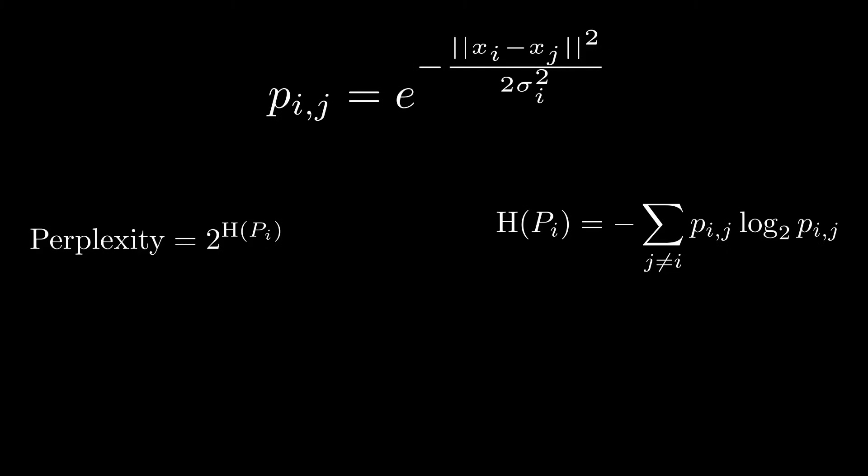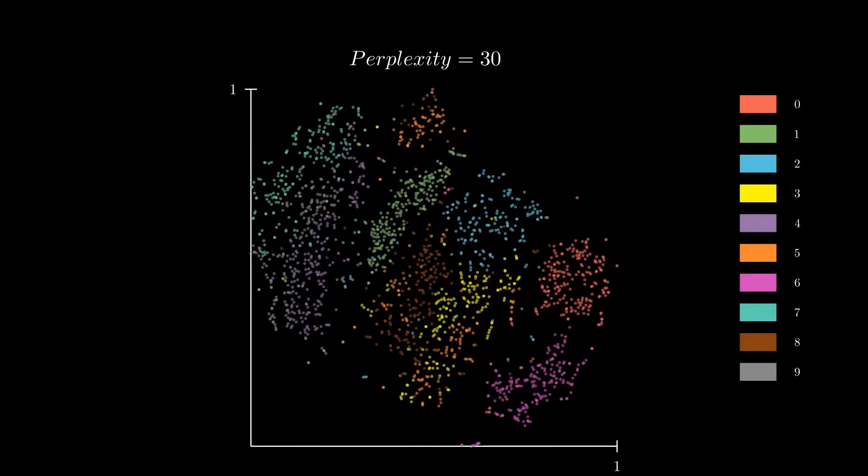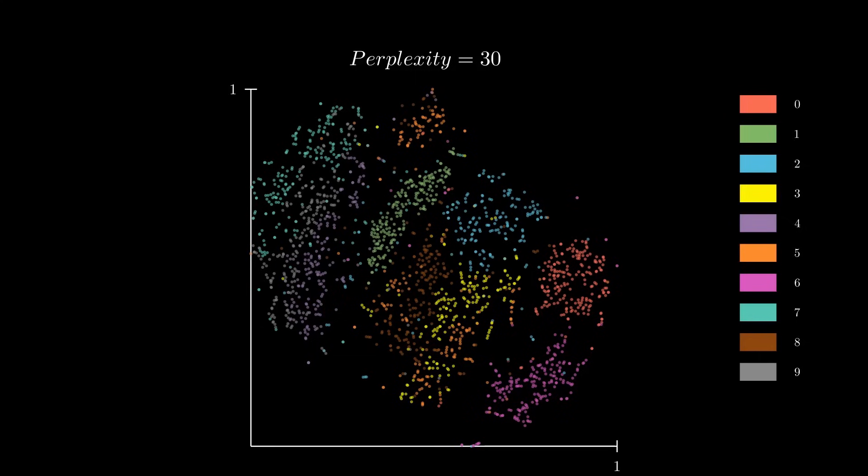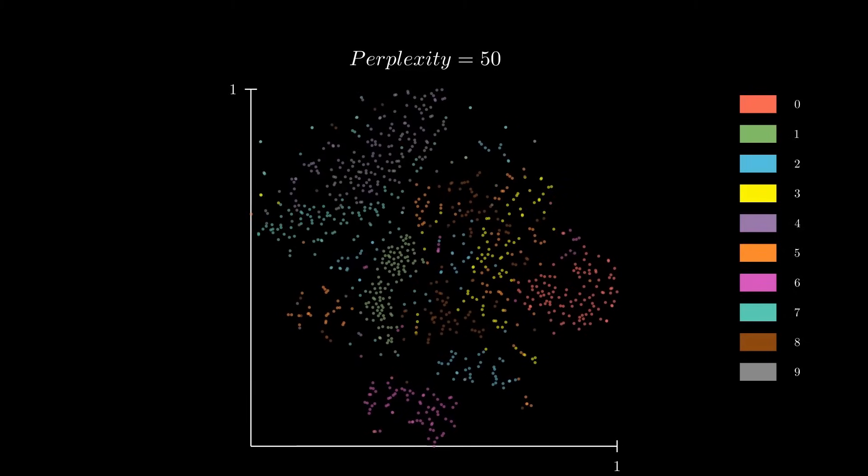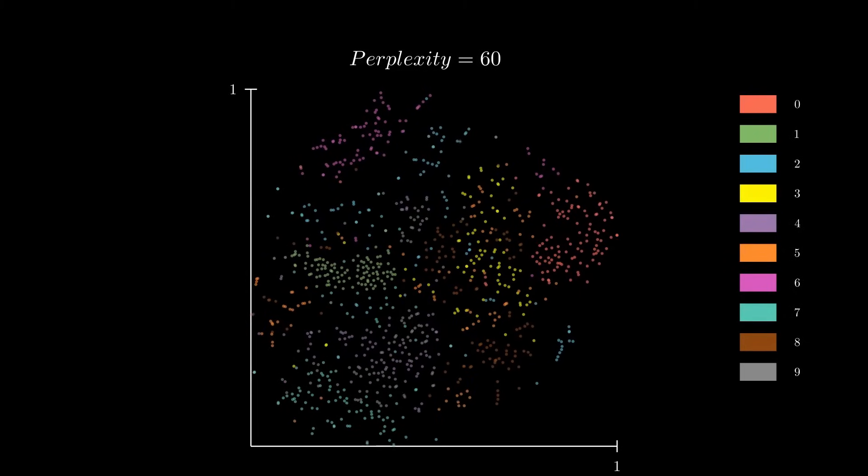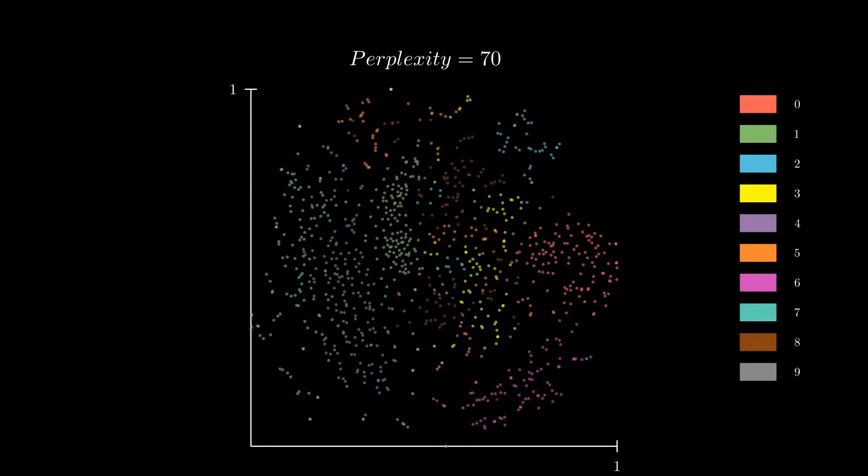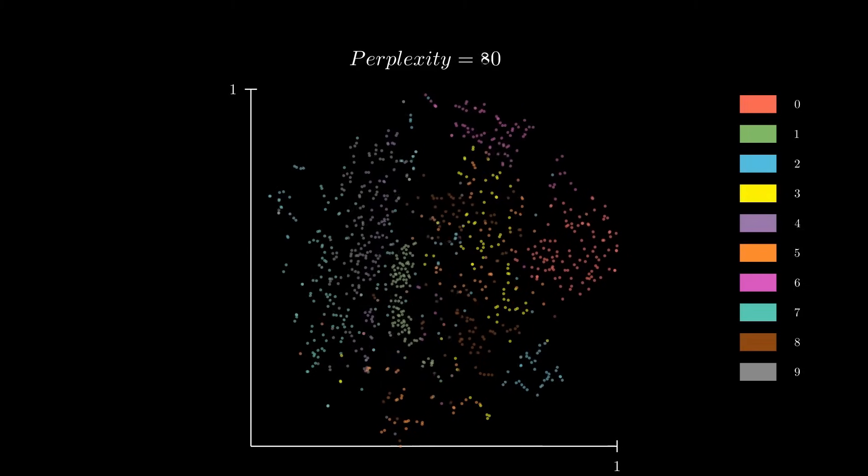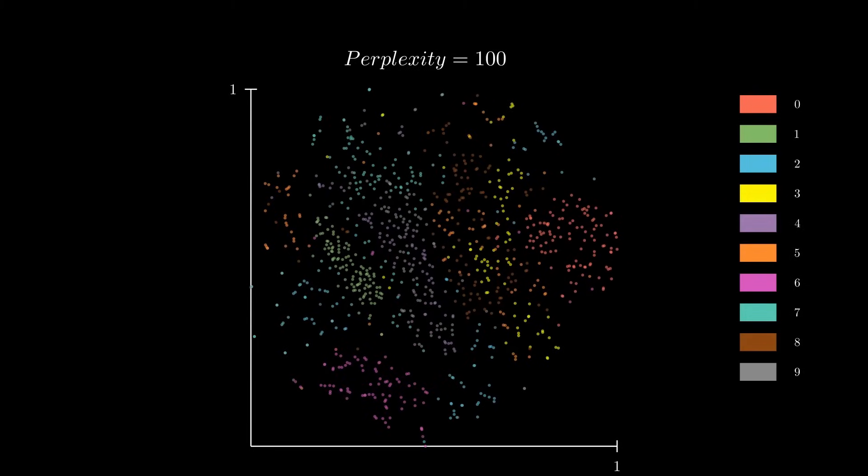Theoretically, the perplexity should represent the number of other points that a given point will consider as neighbors, but in practice this is not so obvious. Let's take the example of the MNIST dataset. Here's the 2D representation computed by SNE with a perplexity of 30. With its default parameters, the algorithm already provides a decent visualization, with some easily identifiable clusters. Let's increase the perplexity and see what happens. As the perplexity increases, the effects on the size of the clusters and their distribution is not all that clear, but the clusters are supposed to be more diffused now. Perplexity is the most important parameter of SNE, but you kind of have to test different values and adjust until you are happy with the visualization.